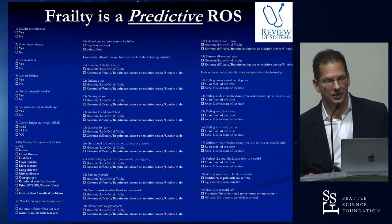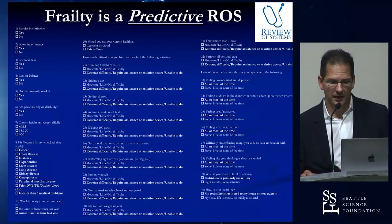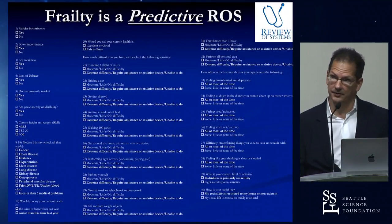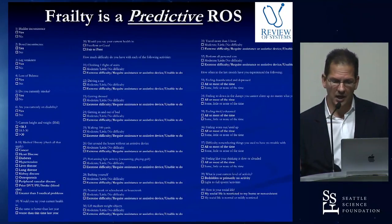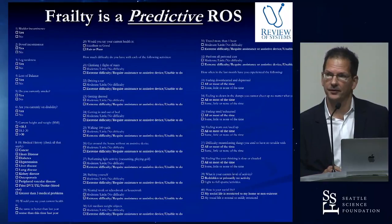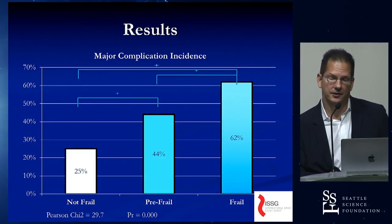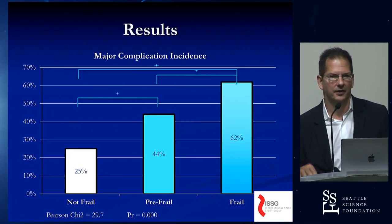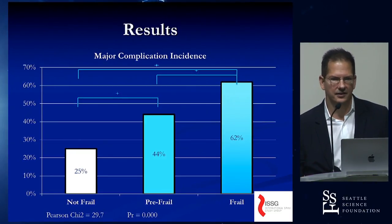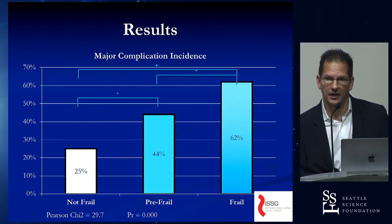Emily Miller in the ISSG group looked through the due diligence on creating a frailty index. Frailty originally came from geriatrics. We created a disease-specific adult spinal deformity frailty index based upon the granular data fields in the ISSG, and found a very good correlation of frailty to major complication rates — and to many other things: pseudoarthrosis, readmission, length of stay.